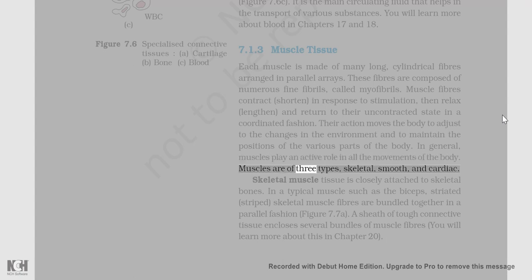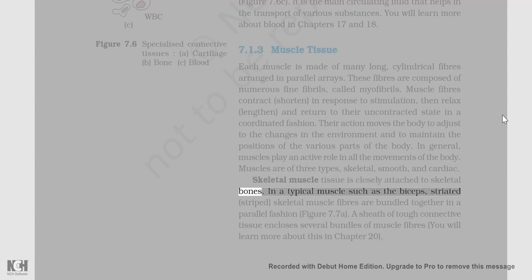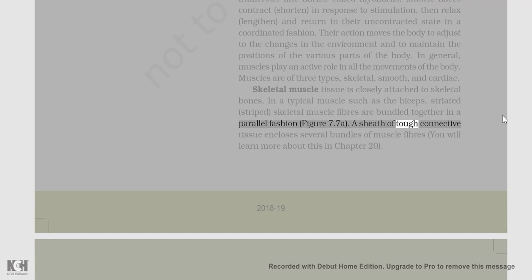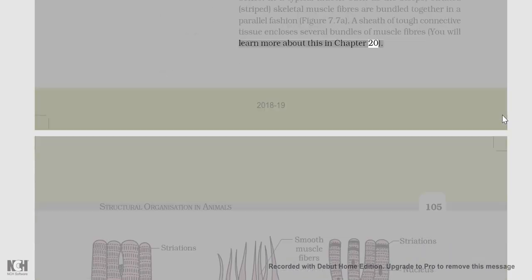Muscles are of three types: skeletal, smooth, and cardiac. Skeletal muscle tissue is closely attached to skeletal bones. In a typical muscle such as the biceps, striated (striped) skeletal muscle fibers are bundled together in a parallel fashion (figure 7.7a). A sheath of tough connective tissue encloses several bundles of muscle fibers. You will learn more about this in chapter 20.